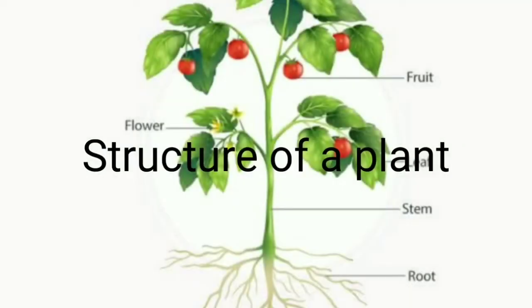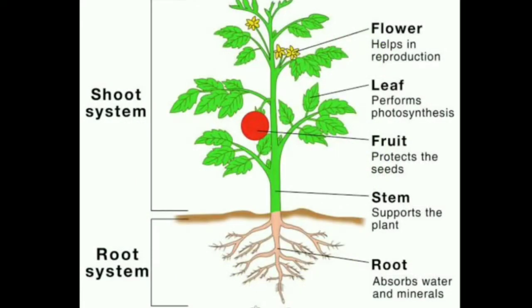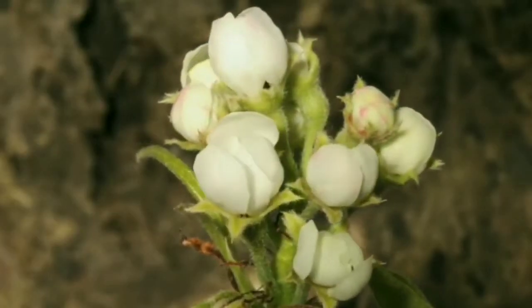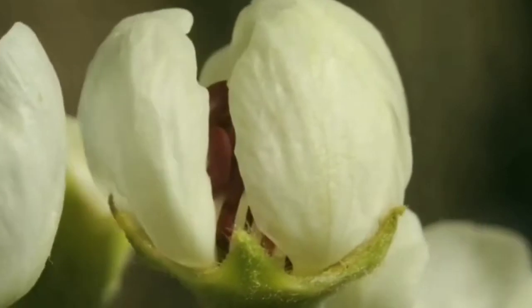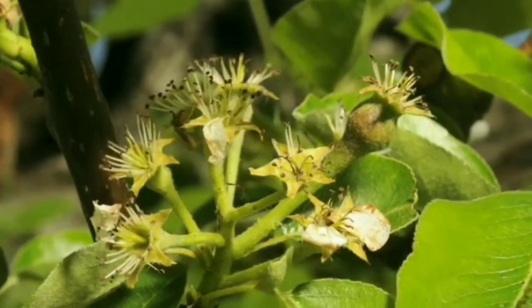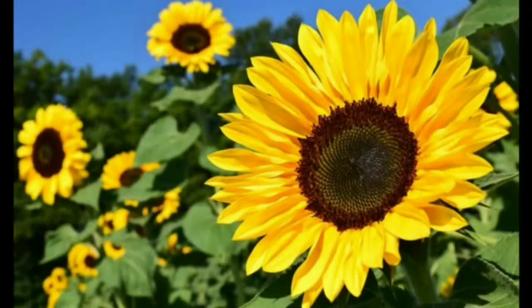The structure of a plant can generally be divided into two parts: the stem which grows above the ground, and the root which grows below the ground surface. The root, stem, and leaves are the main parts of plants. From time to time, plants bear flowers for reproduction. Flowers are transformed into fruits, fruits have seeds, and seeds give rise to new plants.